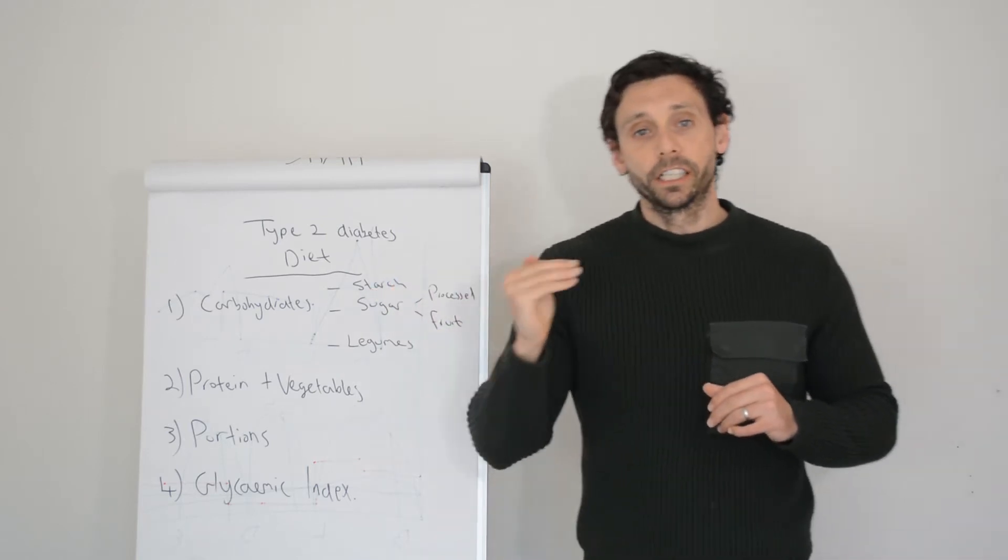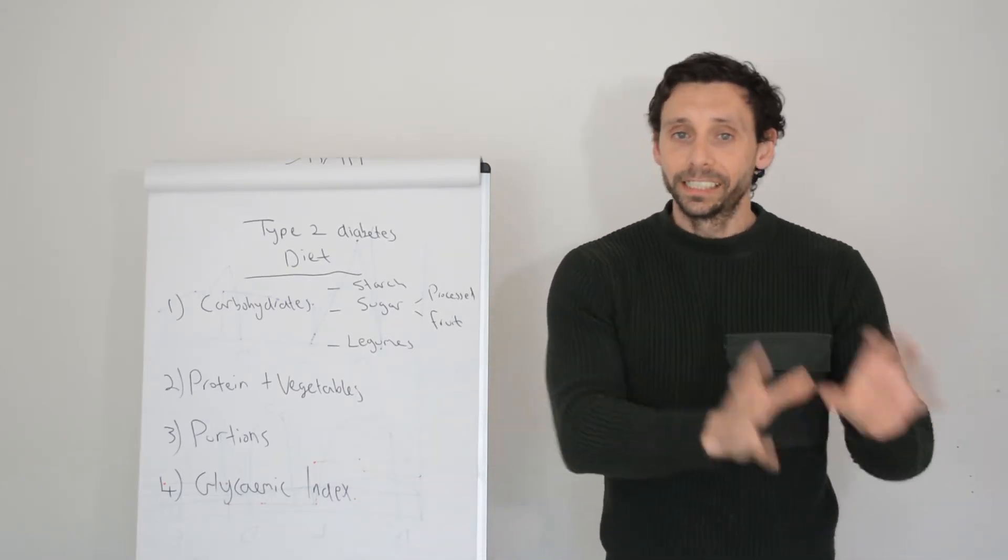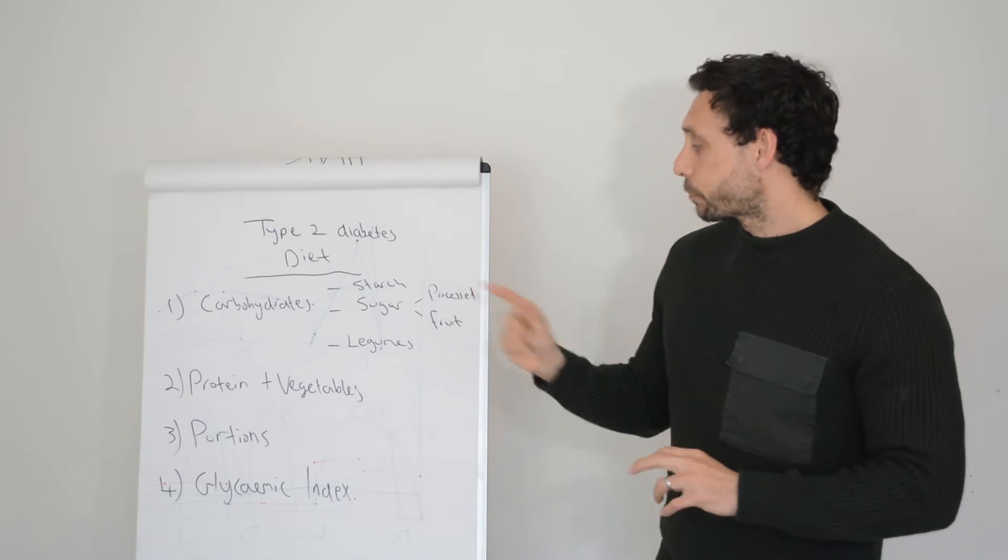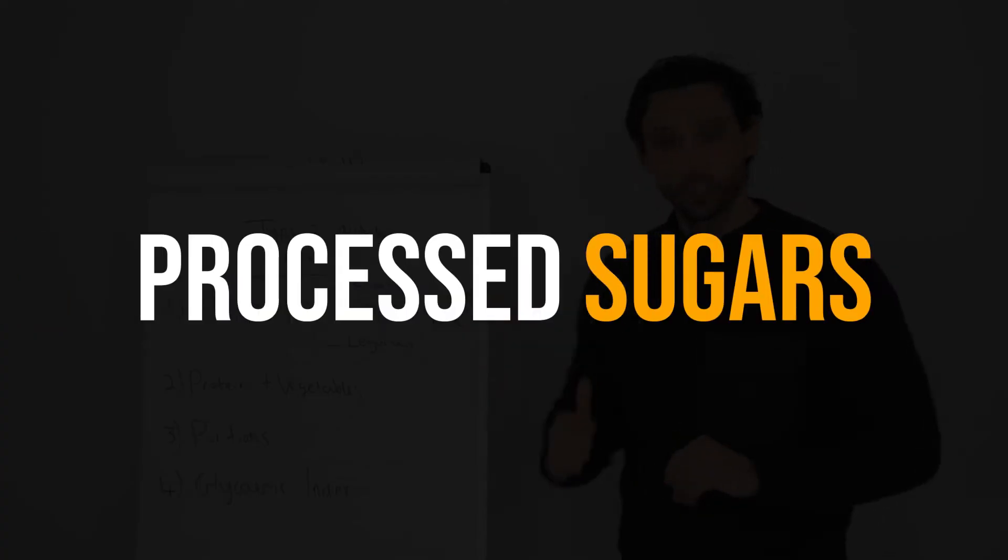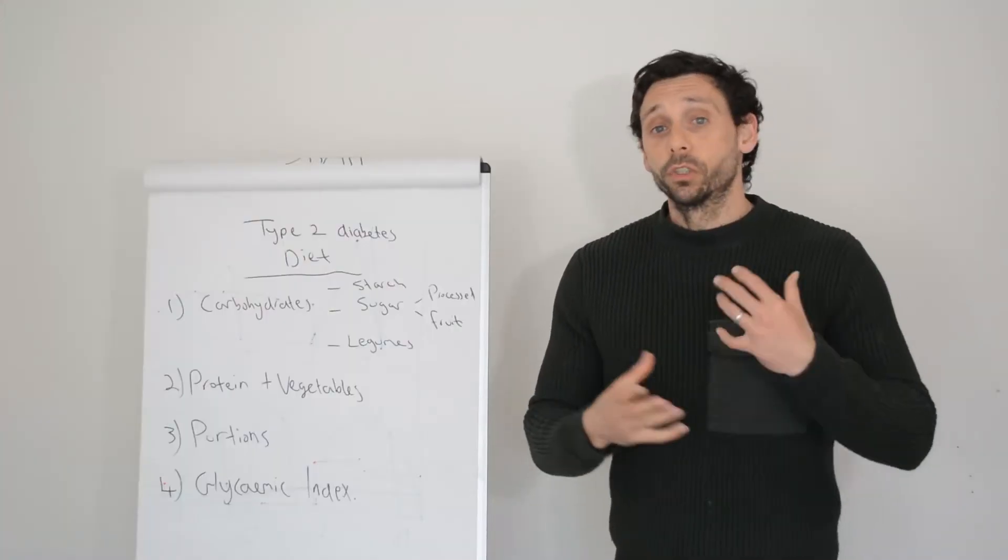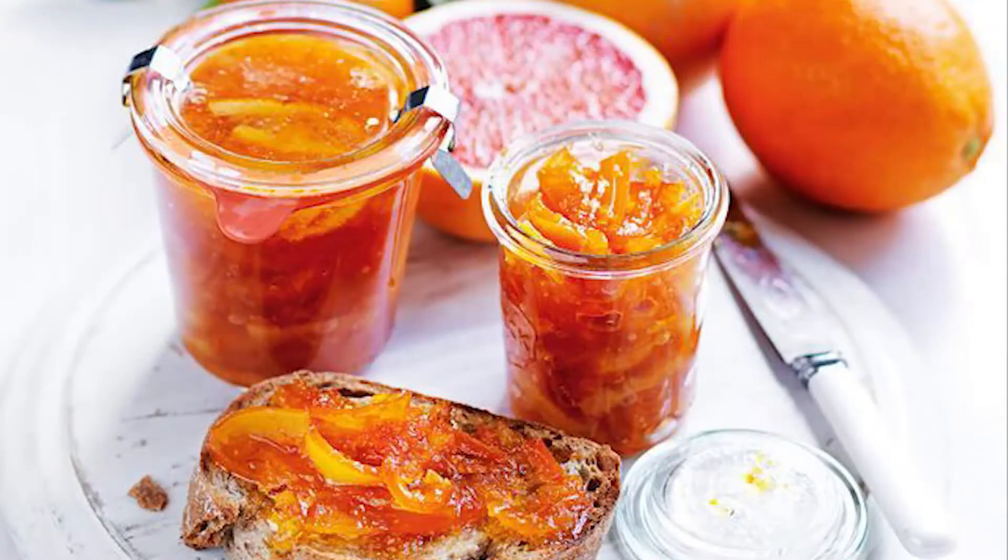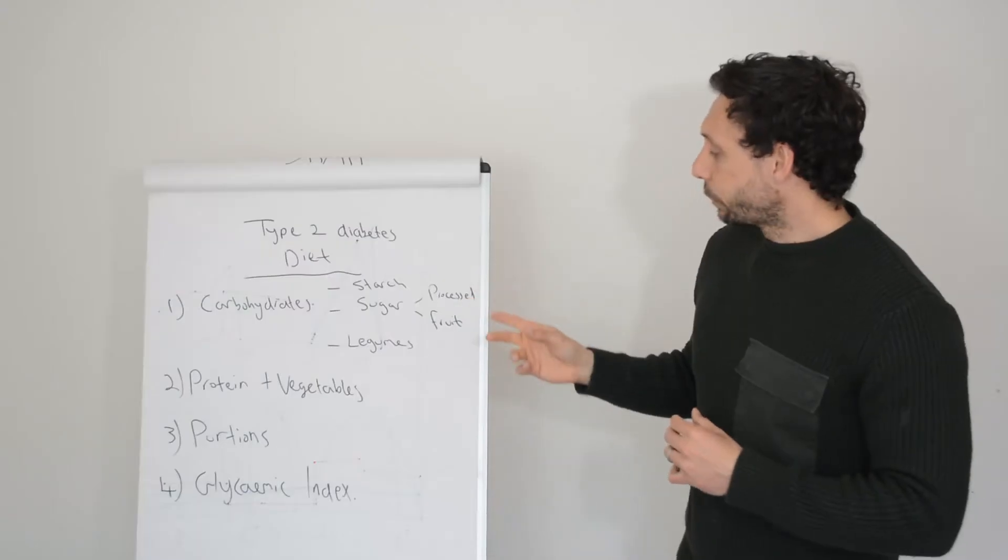The other place we find carbohydrates in the diet is sugar. Sugar is a carbohydrate, it's not a separate thing. We have two types of sugar: processed sugars like cakes, biscuits, sweets, but also things that are highly processed like juices and jams and marmalades and sugary drinks.